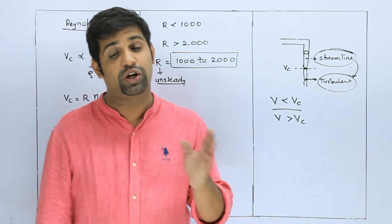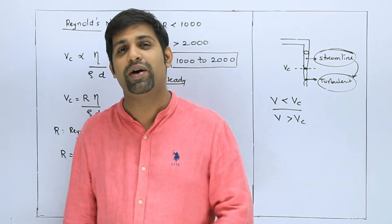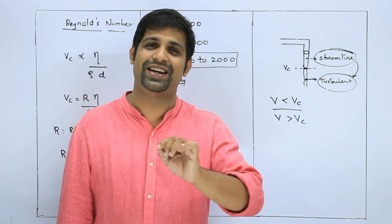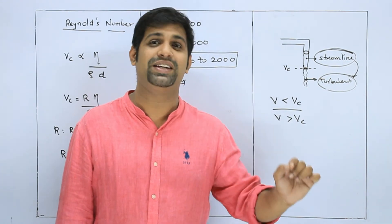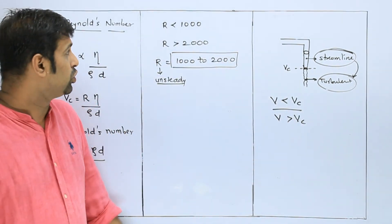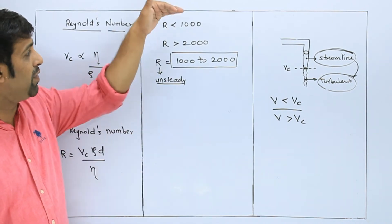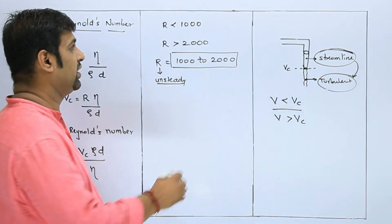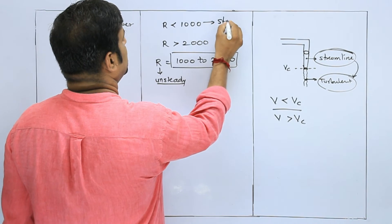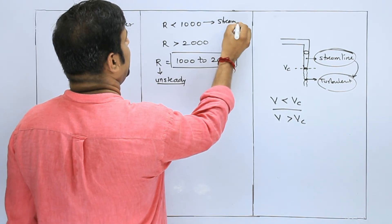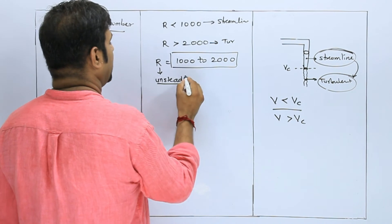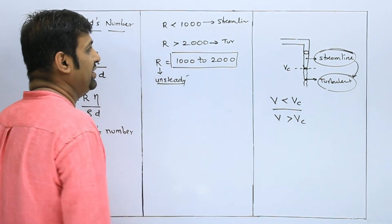And if R is between 1000 and 2000, the flow is unsteady — the streamline is getting converted into turbulent. So basically from Reynolds number we know the nature of flow: if R is below 1000 the flow is streamlined, above 2000 it is turbulent, and in between it is unsteady.